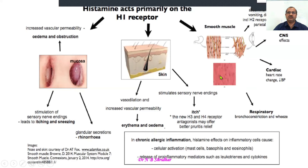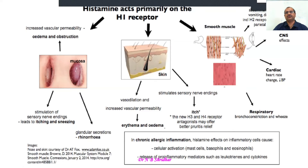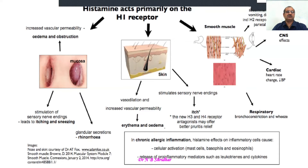Whenever you are bitten by an insect or anything that releases histamine, you get all these responses. Sensory nerve endings are stimulated, causing itching. Severe itching occurs with allergy or other responses. It is suspected that H3 and H4 receptor antagonists may provide better pruritic relief, whereas regular antihistamines do not have much response against itching.